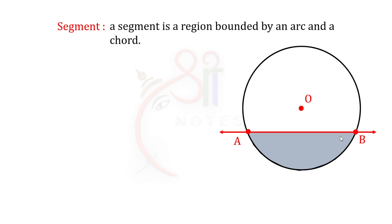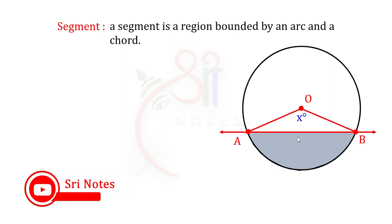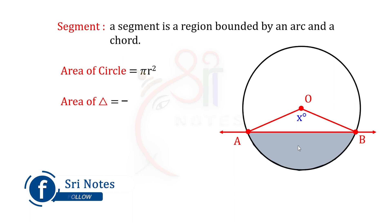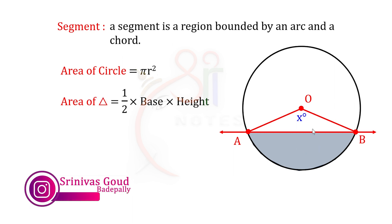From point A and point B, we draw radii to the center point. In most cases the radius value is given. This forms triangle OAB. We find the area of this triangle using the formula: one-half into base into height.